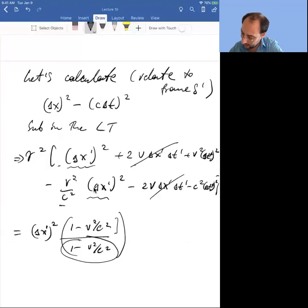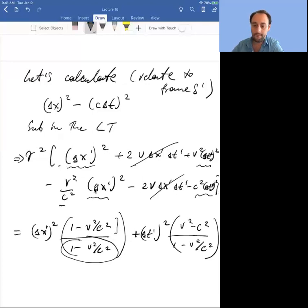Well, evidently this is just one. Let me keep writing, plus something similar that happens with time: plus delta t prime squared, and again there is v squared minus c squared divided by 1 minus v squared over c squared. I can multiply both numerator and denominator by c squared, and what I get is delta x prime squared plus minus c delta t prime squared. Wow.